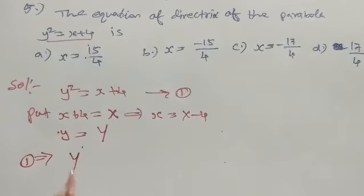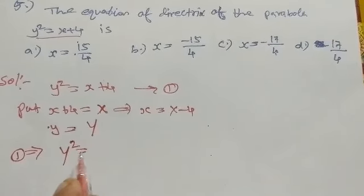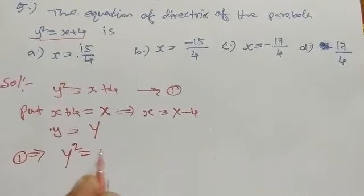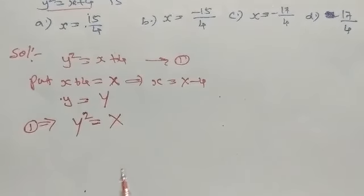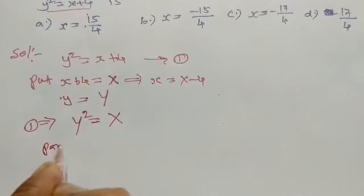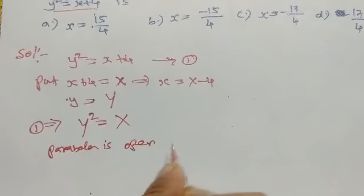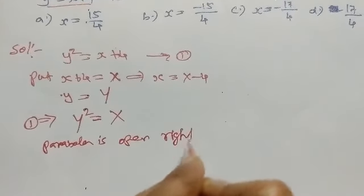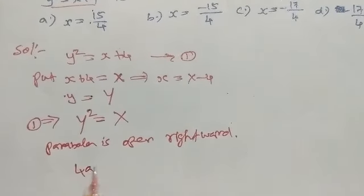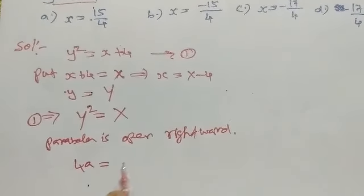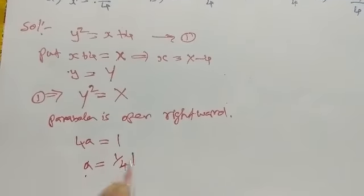The parabola becomes Y squared equal to capital X. Y squared equal to 4aX parabola. Parabola is open rightward. For parabola Y squared equal to X, 4a equal to 1, so a equal to 1 by 4.